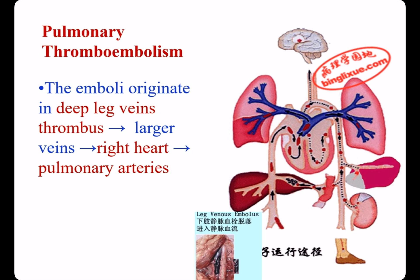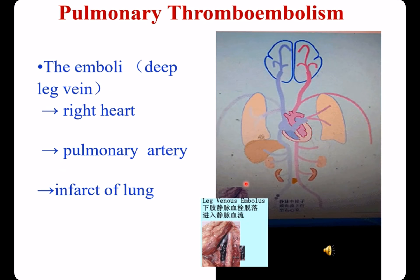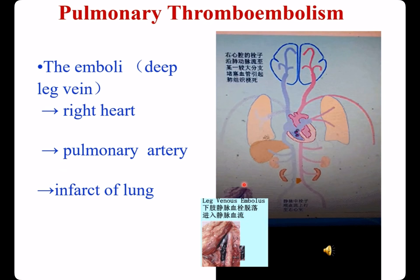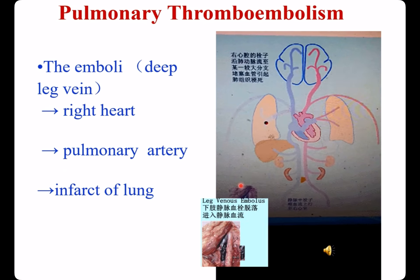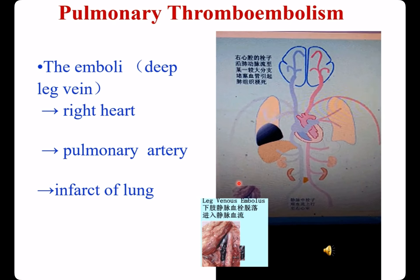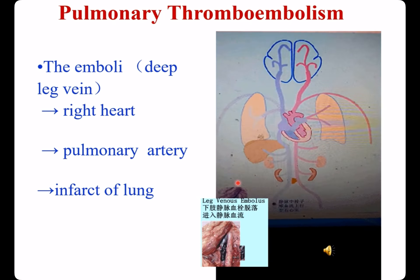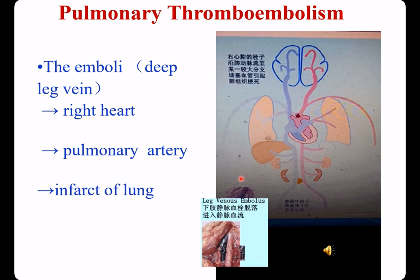Thrombi may lodge in the trunk of pulmonary arteries or in branches of pulmonary arteries, bringing different consequences. Now see this video: the thrombus falls off from a deep leg vein, is carried by blood, passes through the right heart, enters the pulmonary artery, and finally lodges in a branch of the right pulmonary artery, leading to infarction of the lung.